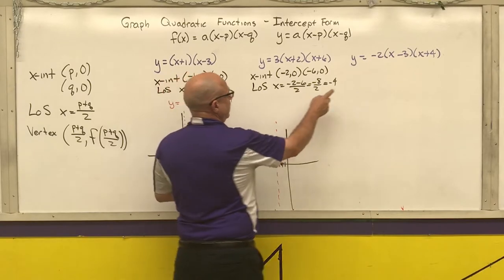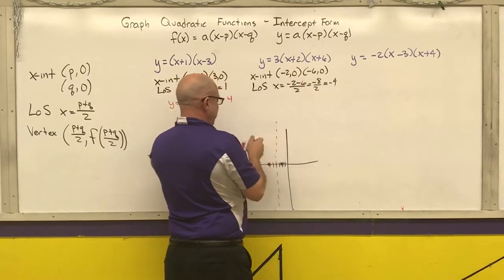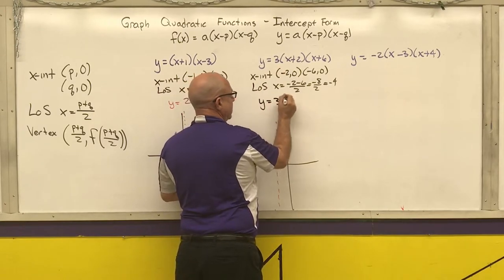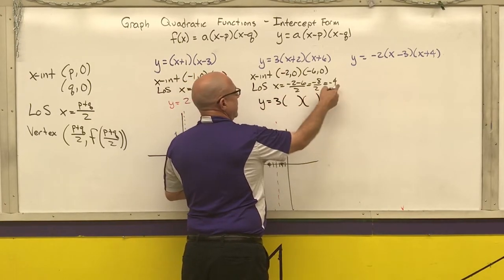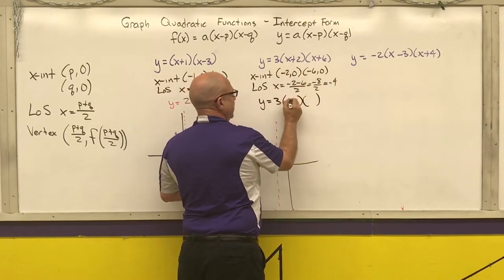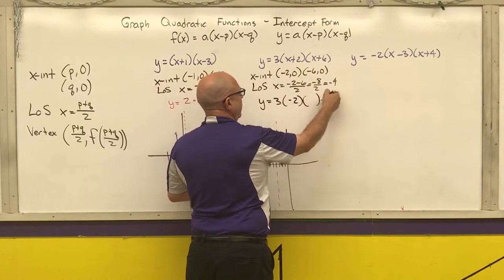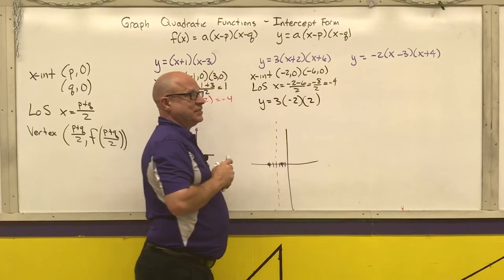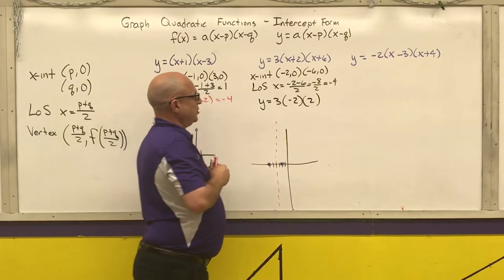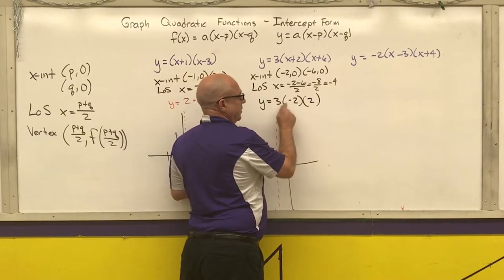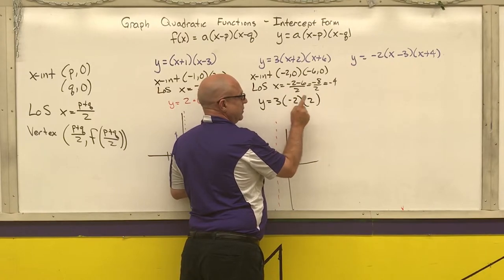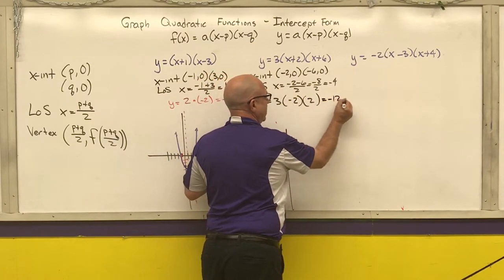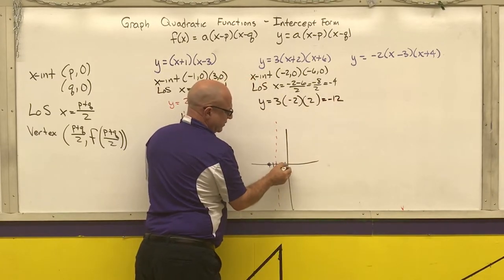Then I take this negative 4 and put it into my original equation. Three stays. Negative 4 plus 2 is negative 2. Negative 4 plus 6 is 2. And again, these have the same number but opposite signs. Now do the multiplication. 3 times negative 2 is negative 6. Times 2 is negative 12. So my vertex is at negative 12.